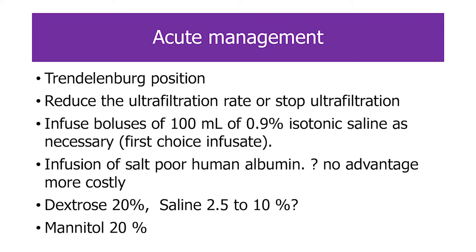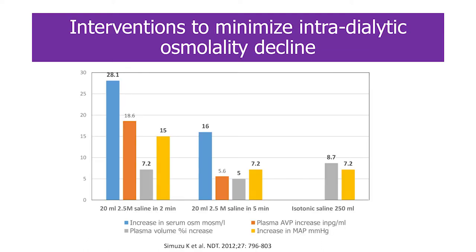Treatment: for the acute condition, first reduce or stop ultrafiltration, then infuse boluses of 100 mL normal saline. Infusion of albumin and human albumin — others have shown no advantage over saline and are more costly. Hypertonic saline, 2.5 molar to 10%, are used around 2.5%. If using those hypertonic solutions, it is important that they must be administered more rapidly.